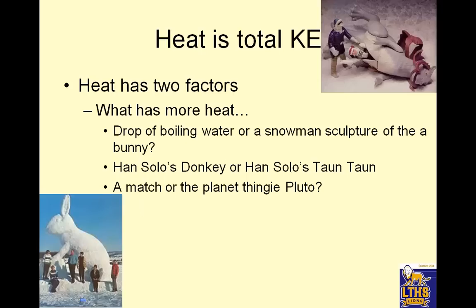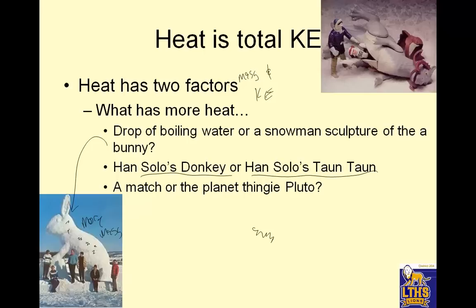Heat is total kinetic energy. It has two factors: mass and kinetic energy. So what has more heat — a drop of boiling water or a snowman sculpture of a bunny? The snowman sculpture of the bunny, because it has more mass. Although the particles don't shake as much (solids shake), the drop of boiling water shakes faster, but there are only a few drops of water. What has more heat — Han Solo's donkey or Han Solo's tauntaun?